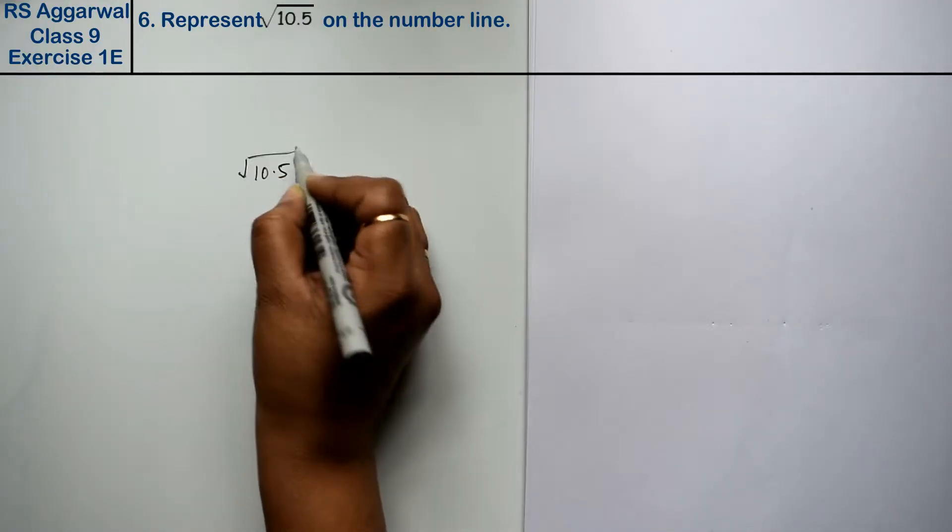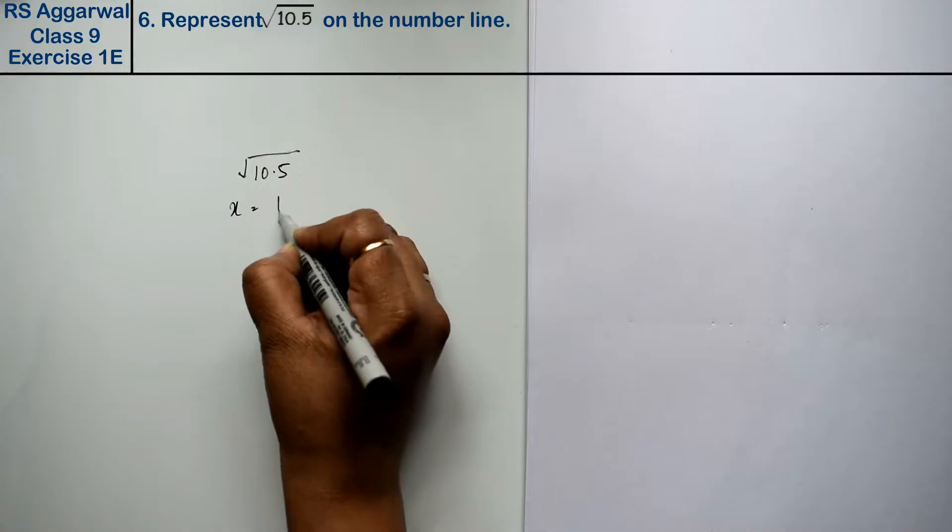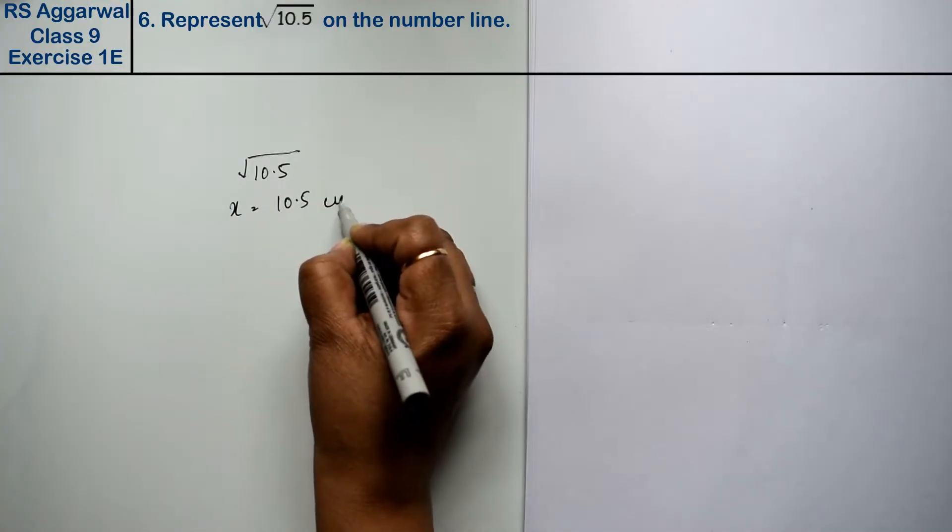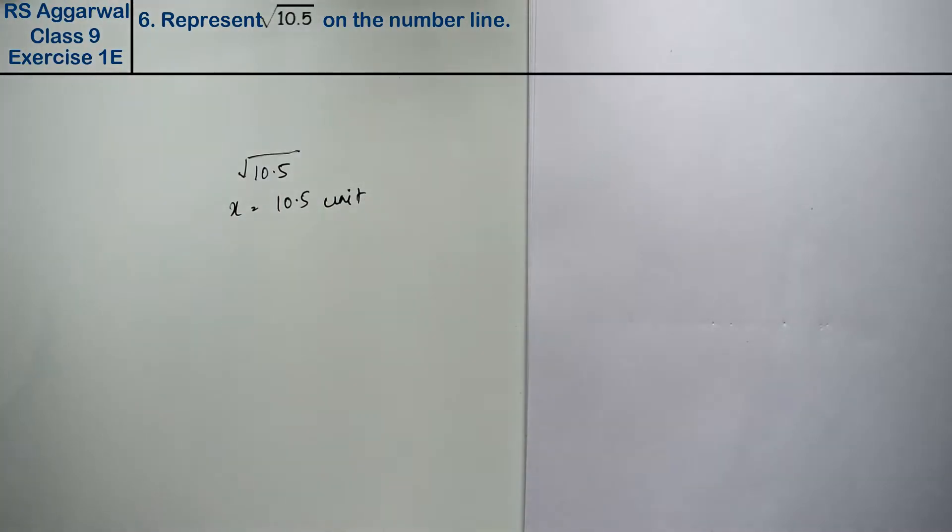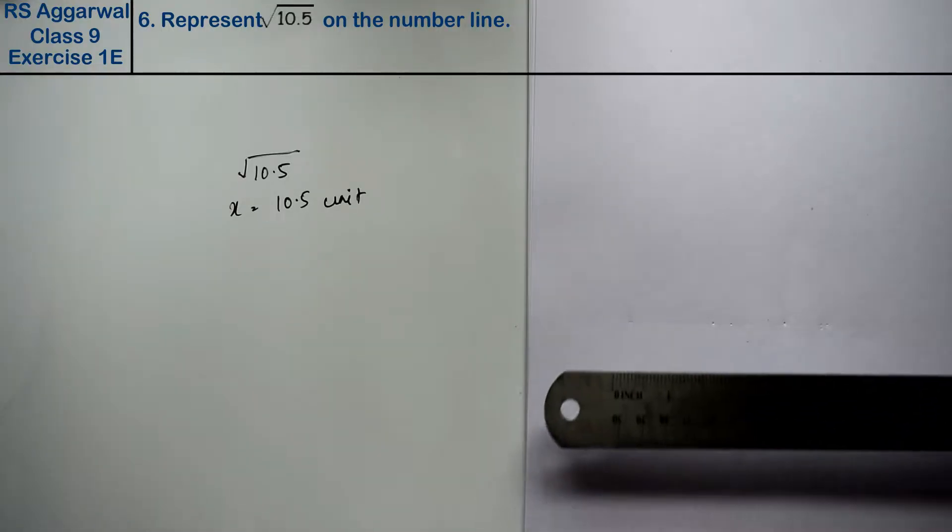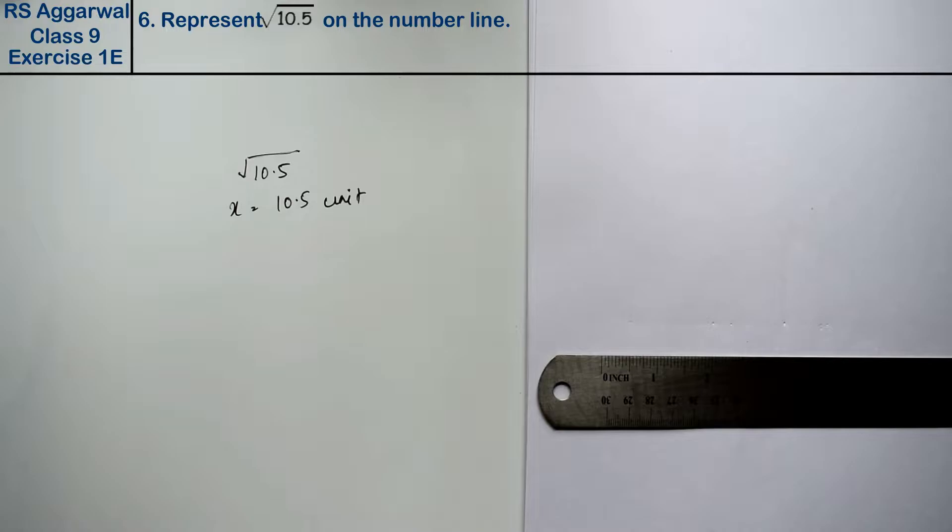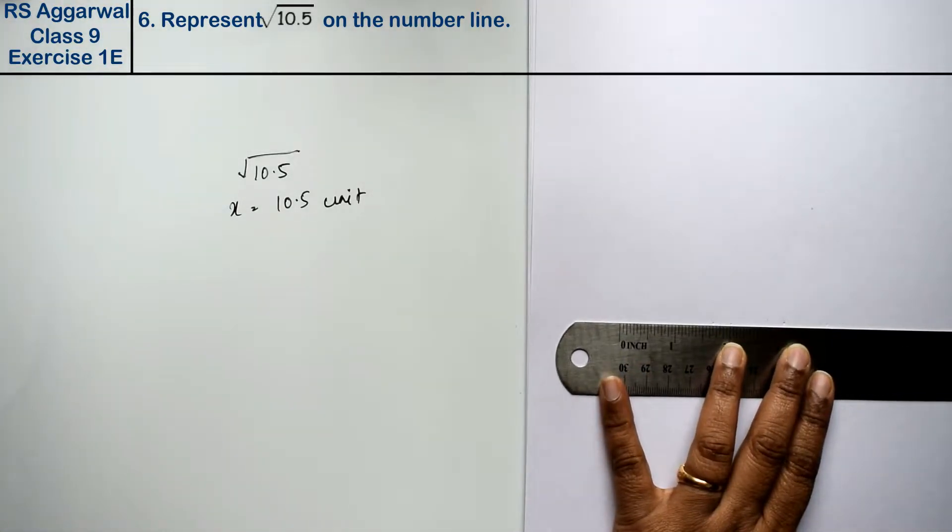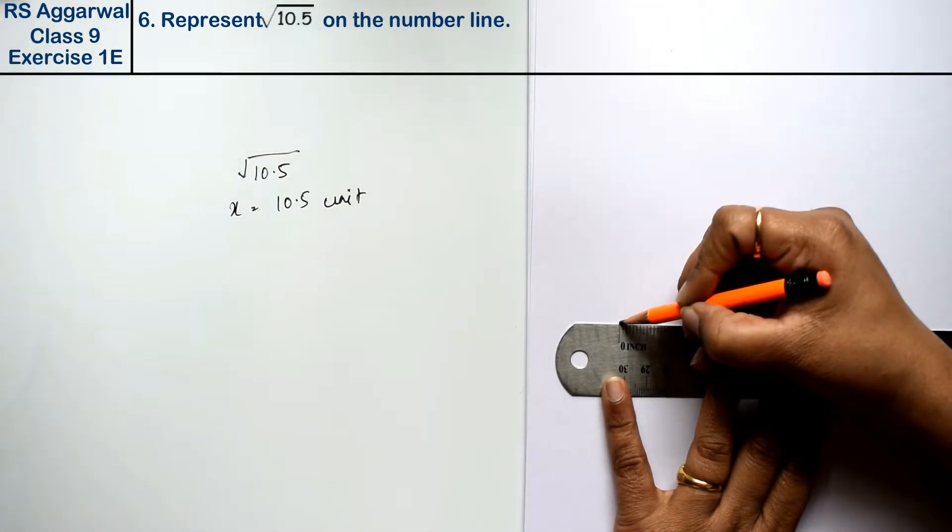Friends, we will take this as x, 10.5 units. Now we will draw a line of 10.5 units. Friends, approximately 10.5, I'm not measuring it. If we put it in units, let's say this is 10.5 units line.